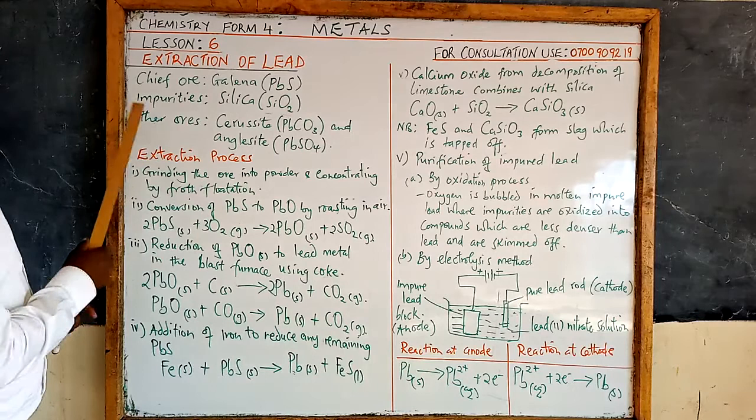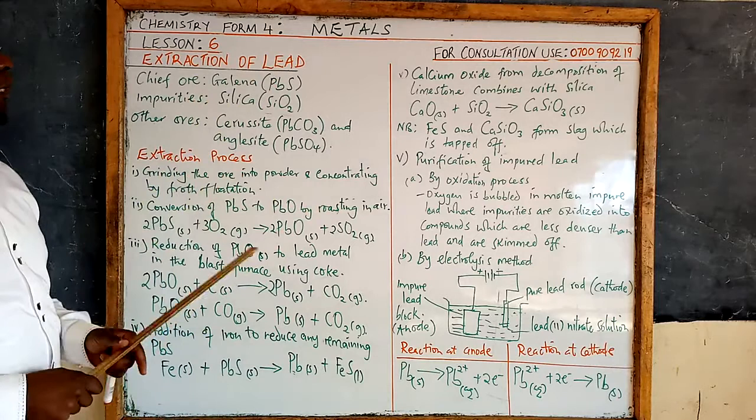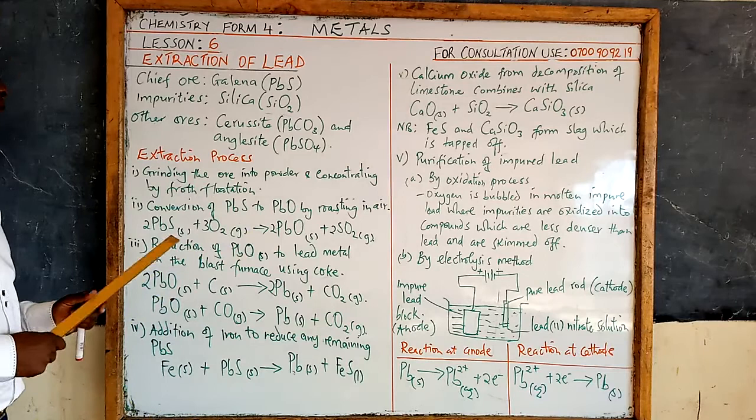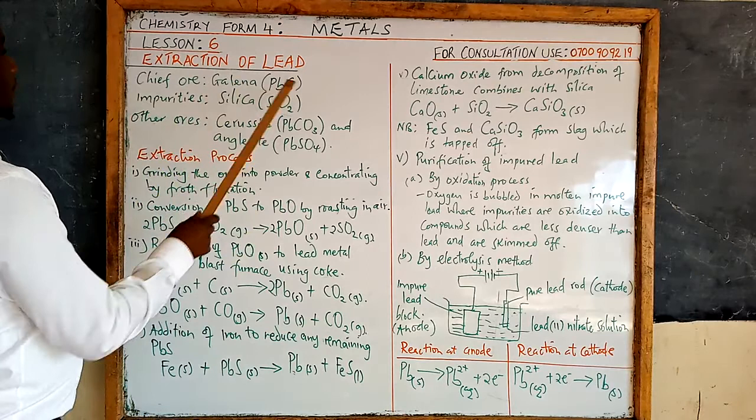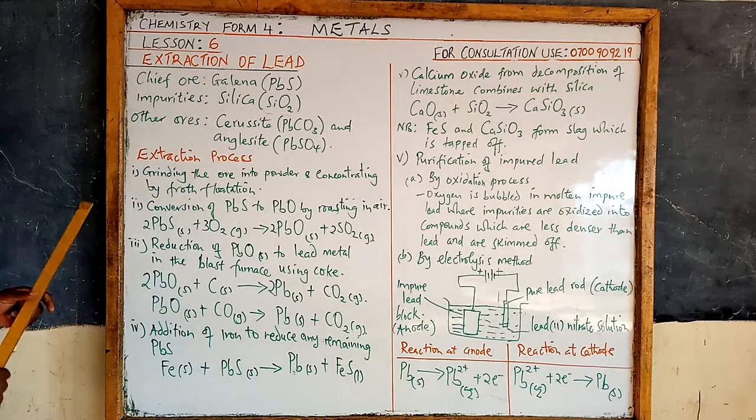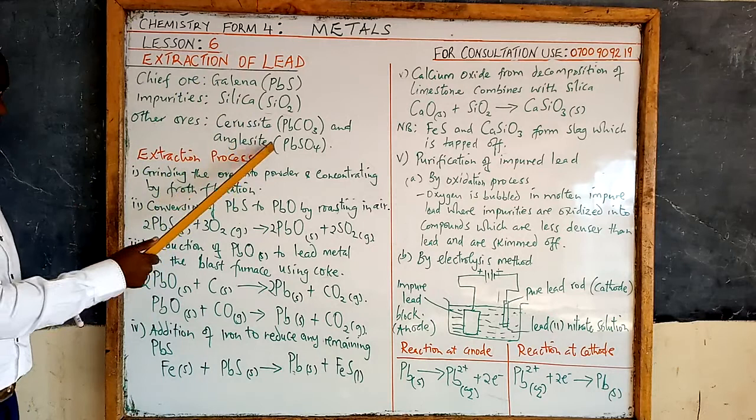In this lesson we are discussing the extraction of lead. The chief ore of lead is galena, symbol lead sulphide. Impurities found in galena include silica. Other ores of lead are cerussite, which is lead carbonate, and anglesite, which is lead sulphate.